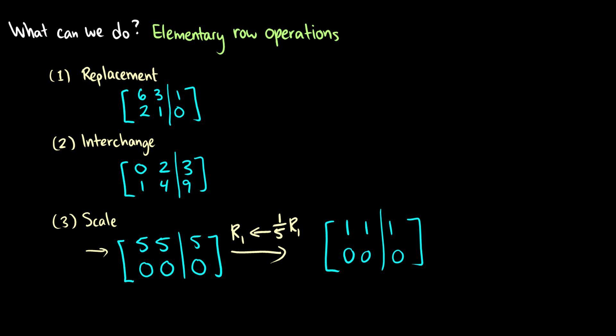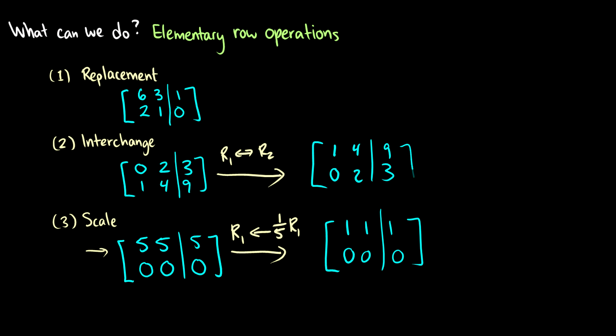When we interchange rows, we just swap their positions. This might not seem meaningful yet — you might ask why we'd ever do this — but in the future it'll make sense. So we can swap row 1 and row 2, and now we have 1, 4, 9, 0, 2, 3 — we just swap the positions.